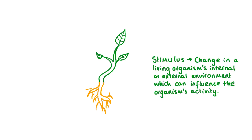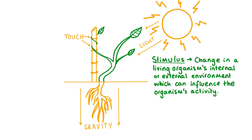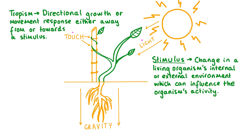A stimulus is a change in a living organism's internal or external environment which can influence that organism's activity. Plants can move in response to stimuli like light, touch, gravity and even heat. Some of these stimuli, like light or touch in certain plants, trigger directional movement responses — growing either towards or away from the stimulus. These directional growth movements are called tropisms.